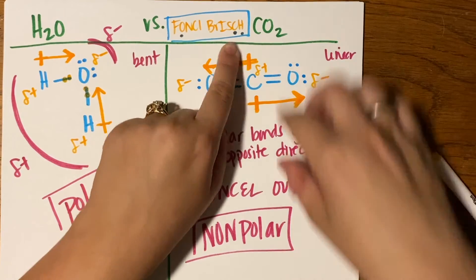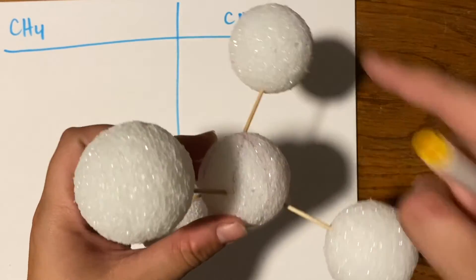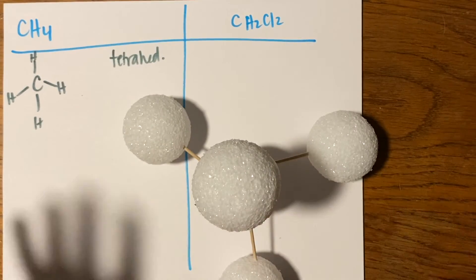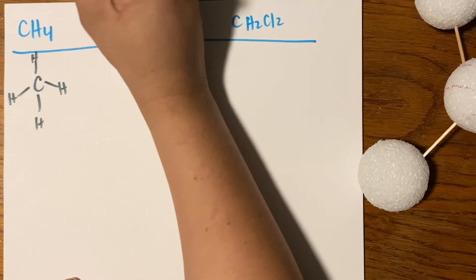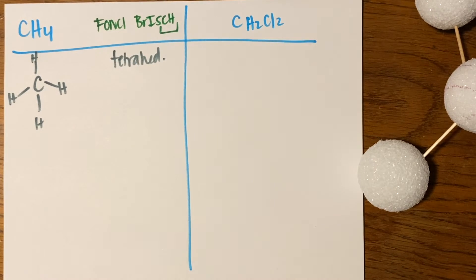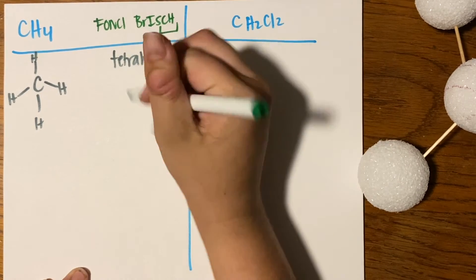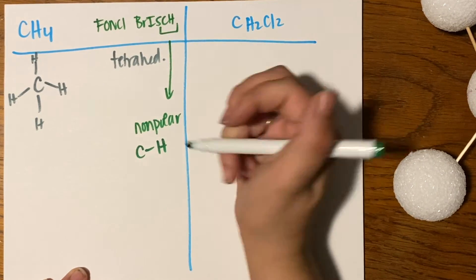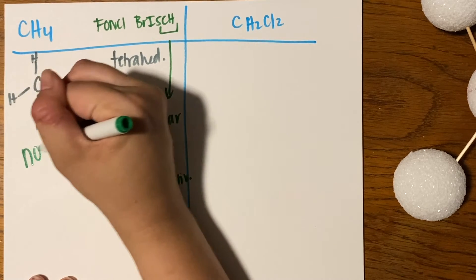For methane, CH₄ - carbon in the middle with four hydrogens in a tetrahedral arrangement - this is all going to be non-polar. Even though carbon appears before hydrogen in the electronegativity rules (Foncelbrich), their electronegativity values are so close to each other that we consider any bond between carbon and hydrogen to be non-polar. So all the C-H bonds in methane are non-polar, and the overall molecule is non-polar.